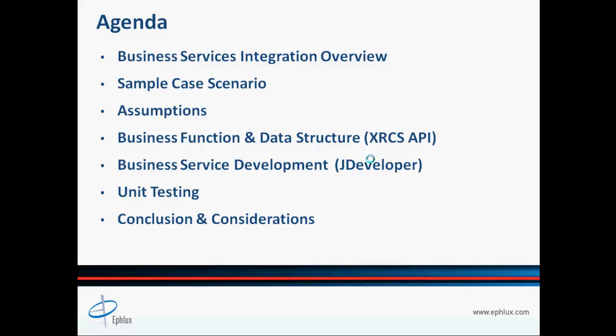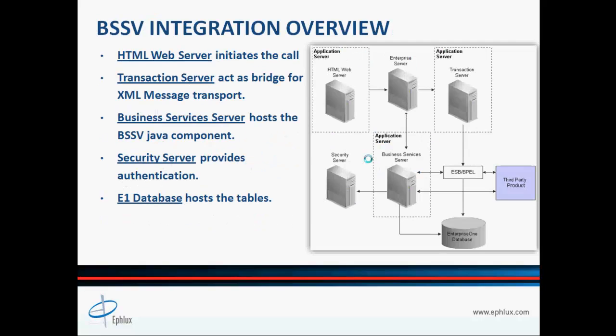In Part 3 of this video, we will continue with our business service development using JDeveloper. We'll talk about the major components of a business service and how they communicate back to our business function. In Part 4, we'll talk about unit testing your business function and business service for ensuring a smooth and trouble-free deployment and execution. Finally, in the conclusion segment, we'll discuss some important points to consider during design and development of your business services.